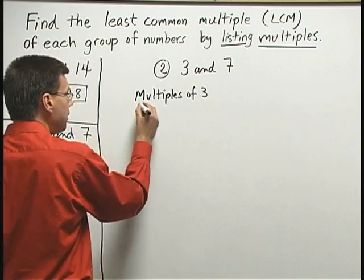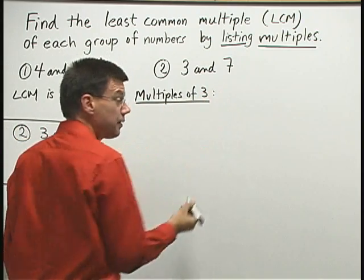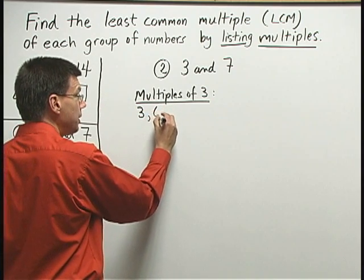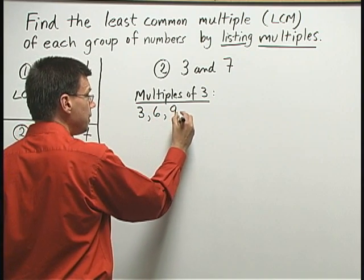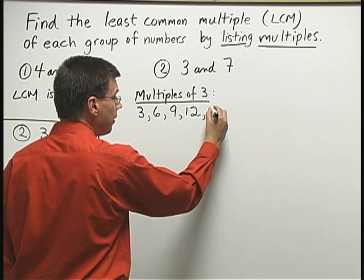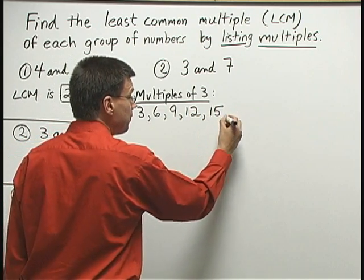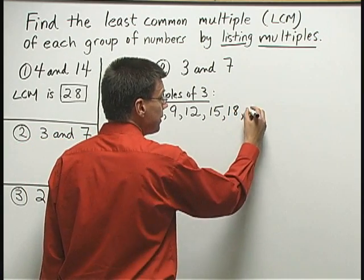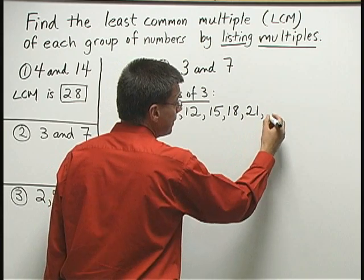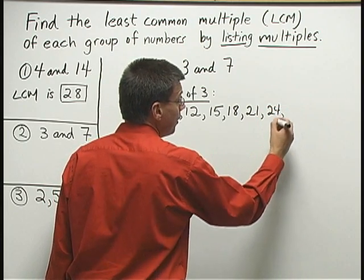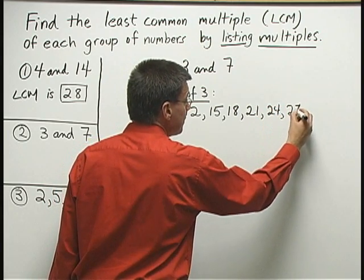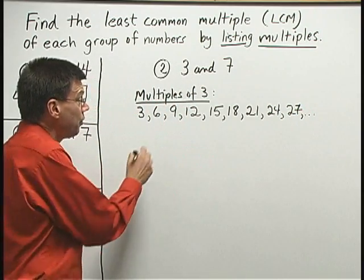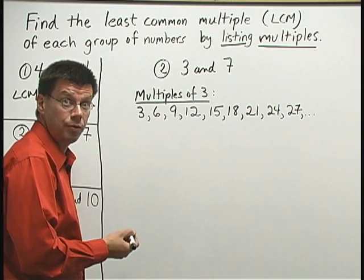I don't know exactly how many I need when I start out, but I just list a whole bunch of them. 1 times 3 is 3, 2 times 3 is 6, 3 times 3 is 9, 4 times 3 is 12, 5 times 3 is 15, 6 times 3 is 18, 7 times 3 is 21, 8 times 3 is 24, 9 times 3 is 27. And I'll stop there for now. They go on and on. Perhaps that's enough for me to get through this problem.